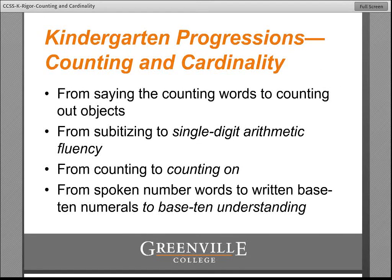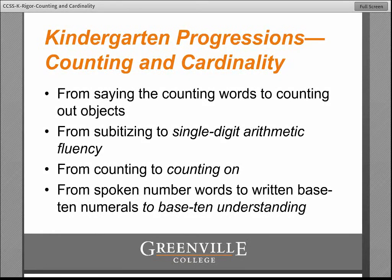These are the progressions that relate to the counting and cardinality domain. From saying the counting words to actually counting out objects. From subitizing — being able to see things at a glance — to single digit arithmetic fluency, which involves seeing more than one group at a glance and then merging those groups using a mathematical relationship. From counting by ones to counting on. And from spoken number words to the written base-ten numerals, understanding that relationship and how our number system and the way we write numerals is embedded with base-ten meaning.